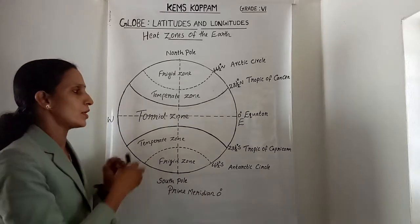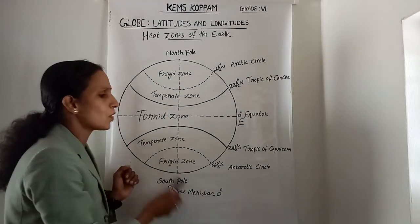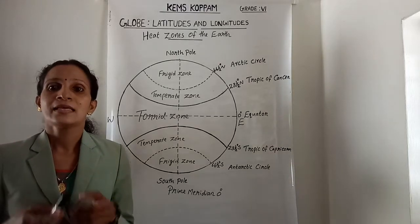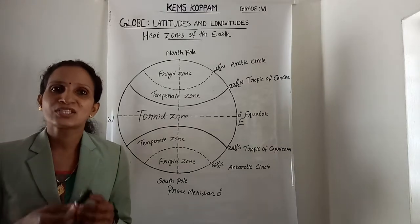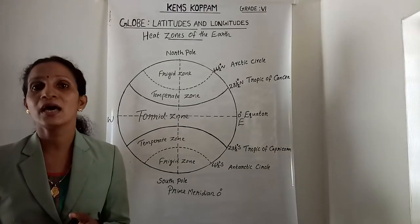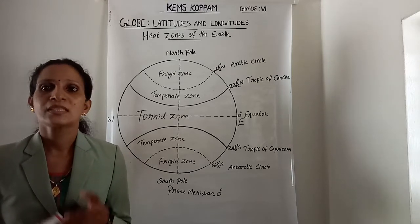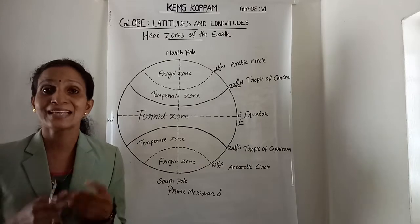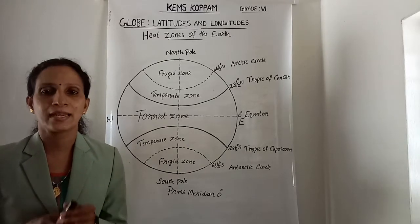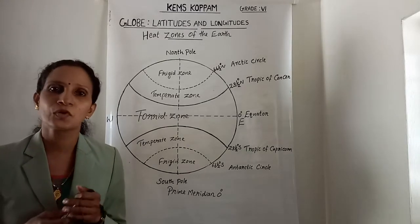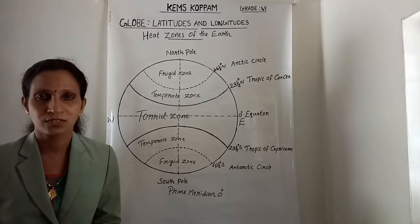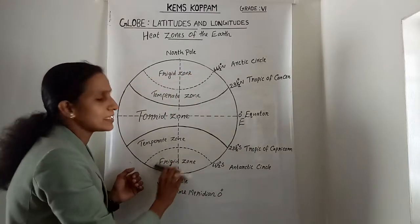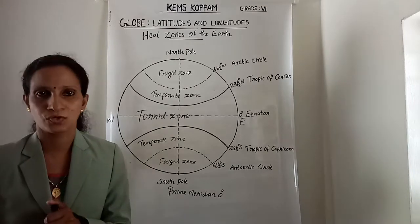This area is very cold. It is because here the sun does not rise much above the horizon. Therefore its rays are always slanting and provide less heat. These areas are therefore called the Frigid Zones or cool zones.